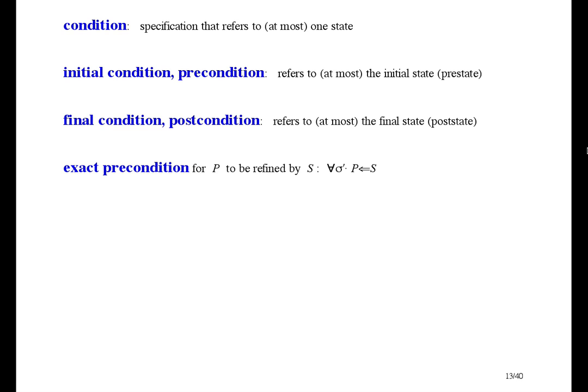Now, p and s can talk about both sigma and sigma prime. This formula makes sigma prime local, and sigma is non-local, so this formula just talks about sigma, the pre-state.